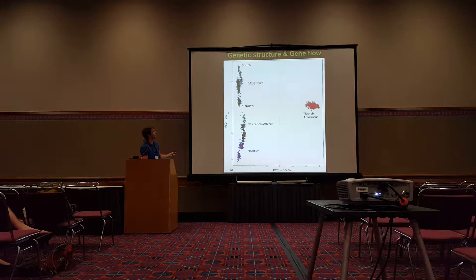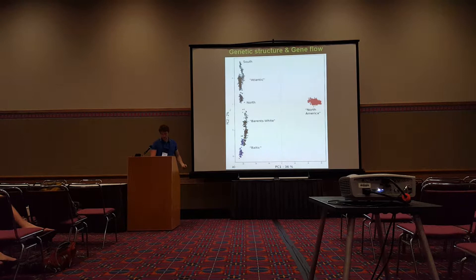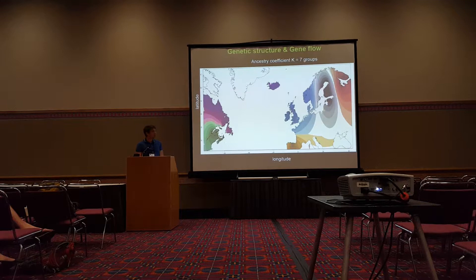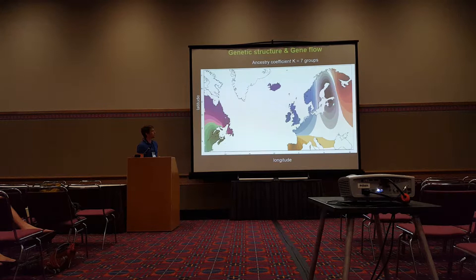We can see this more visually using a spatial interpolation of population structure. We find the larger groups in Europe, and using a TreeMix approach, we can see the French and Northern populations, and then the Spanish population.